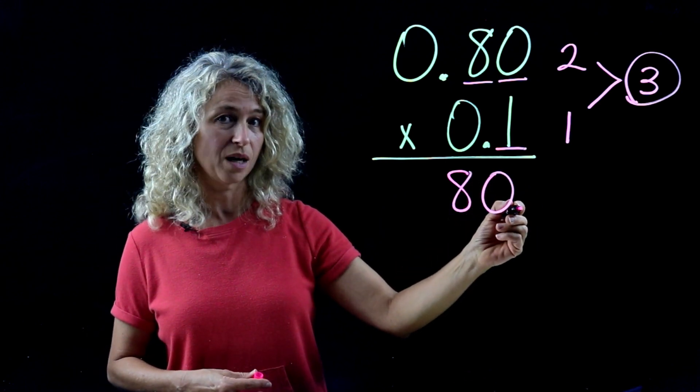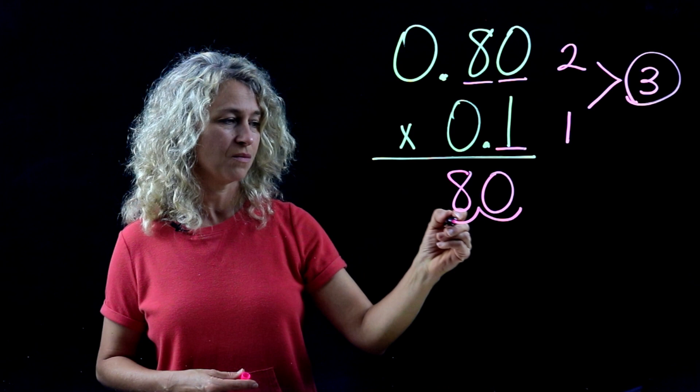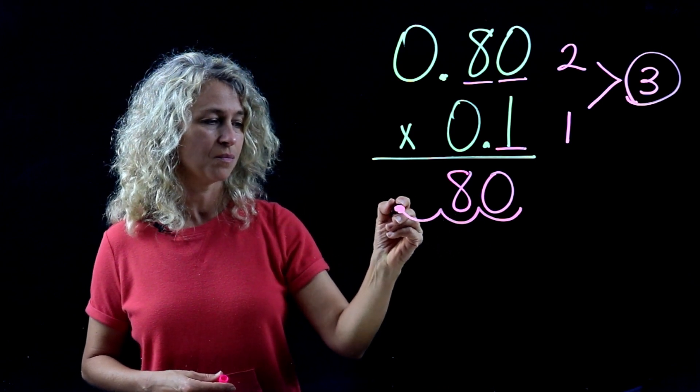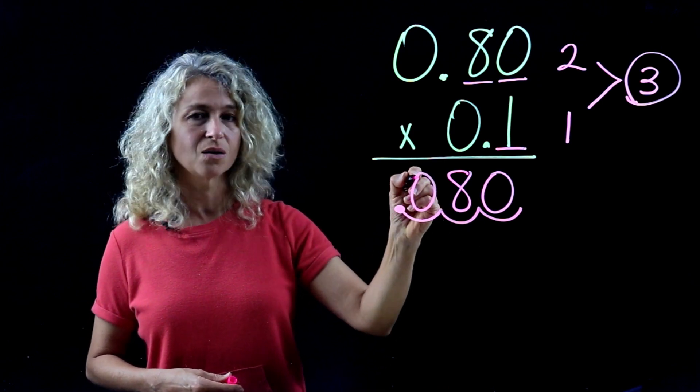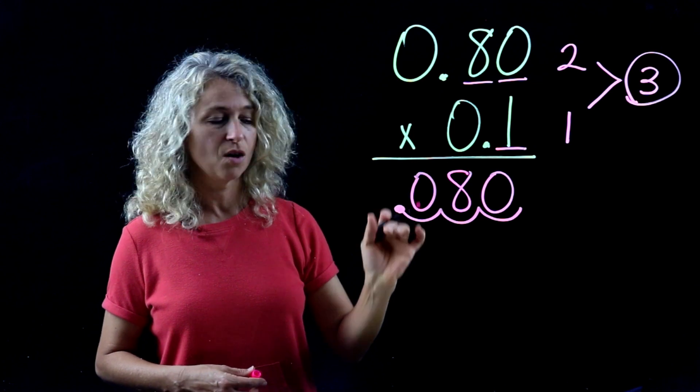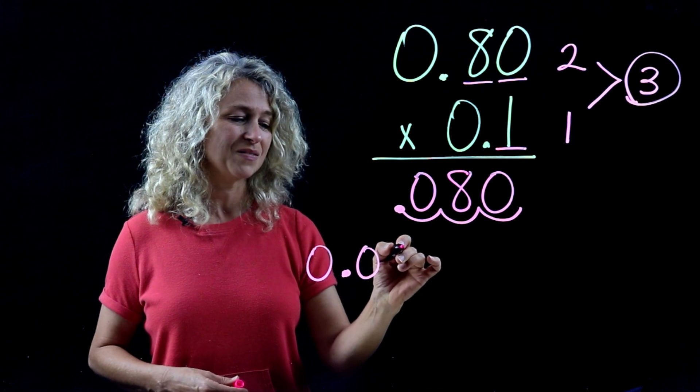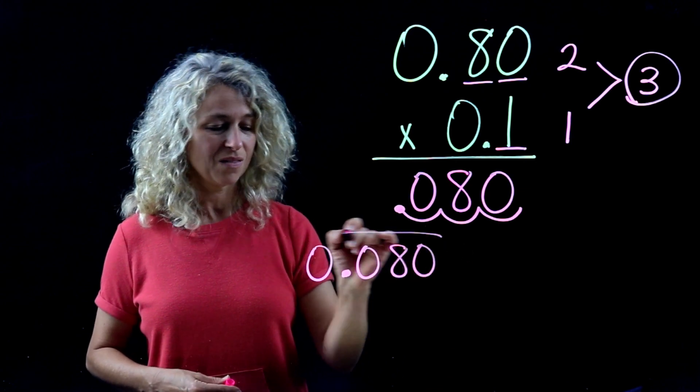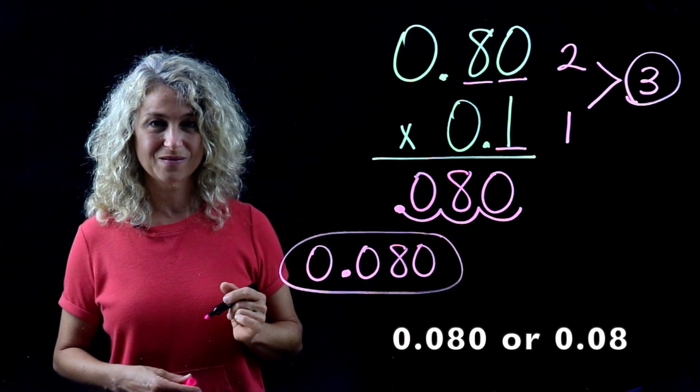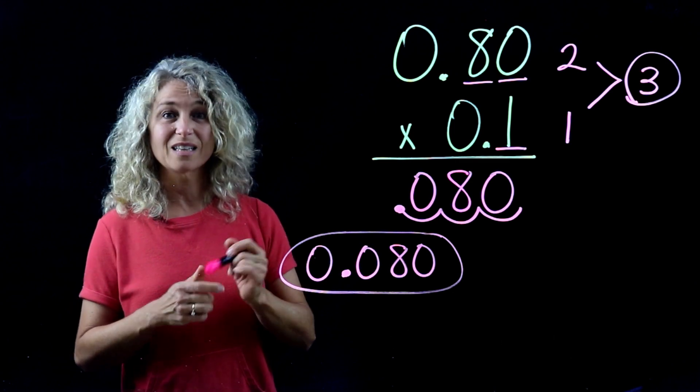We're going to now move 3 decimal places over in the product as well: 1, 2, 3. Fill in the hole with the 0 for your final answer of 0.80 thousandths. 0.80 thousandths. Okay, thank you for watching.